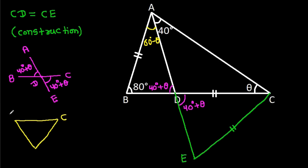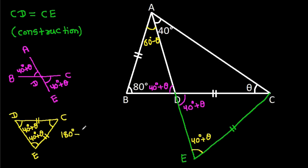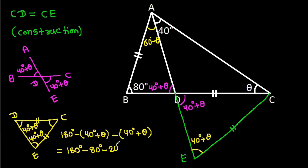And in triangle CDE, we have CD is equal to CE. That means these two angles will be equal. This angle is 40 degrees plus theta, so this angle will also be 40 degrees plus theta. This angle will be 180 degrees minus (40 degrees plus theta) minus (40 degrees plus theta), which is 180 degrees minus 80 degrees minus 2 theta, that will be 100 degrees minus 2 theta.